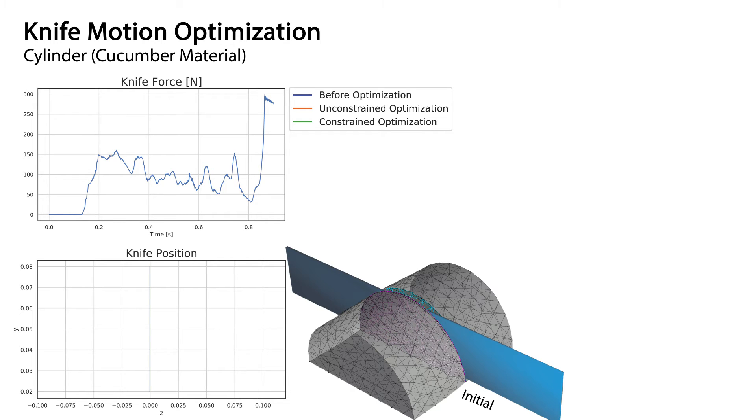Studies have shown that humans perform sawing motions when cutting biomaterials in order to reduce the required force. As we will see, such behavior emerges when we use constrained trajectory optimization.